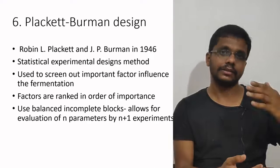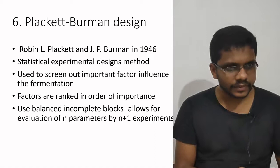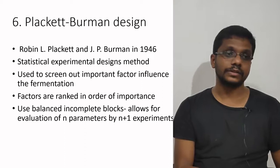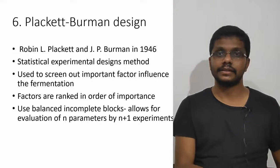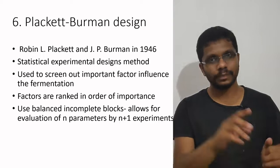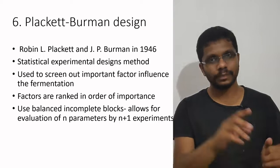Plackett-Burman is a statistical experimental design that uses balanced incomplete blocks. If you want to evaluate the effect of n parameters, you need to do only n+1 experiments. For example, if you want to optimize 11 parameters, you need to do only 12 experiments; for 39 parameters, only 40 experiments. For n parameters, you need to do only n+1 experiments.